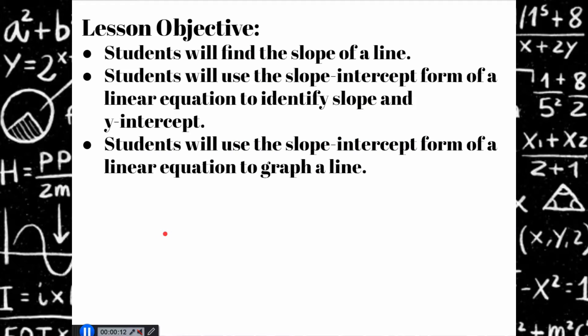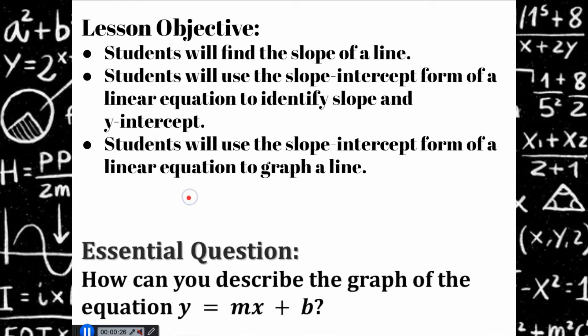Our objectives today are that you, the student, will find the slope of a line, you will use the slope-intercept form of a linear equation to identify slope and y-intercept, and you will use slope-intercept form of a linear equation to graph a line. As we proceed through the lesson today and you are solving problems, I want you focused on how you can describe the graph of the equation using y equals mx plus b, slope-intercept form.